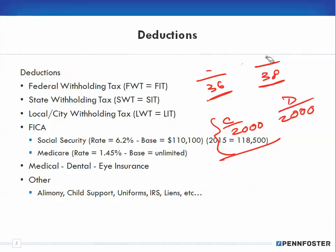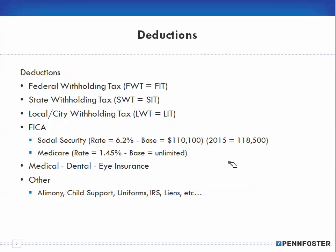So with all of that, the major deductions always taken into consideration are: Federal Withholding Tax, abbreviated FWT — or FIT in the book, which stands for Federal Income Tax; State Withholding Tax, SWT or SIT; Local or City Withholding Tax, LWT or LIT; and then FICA. FICA is made up of two things: Social Security and Medicare.